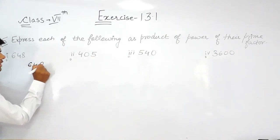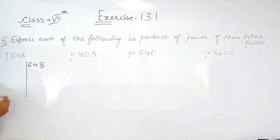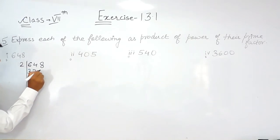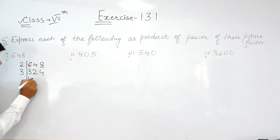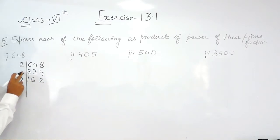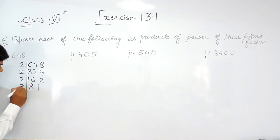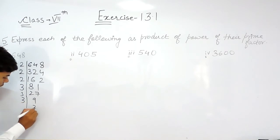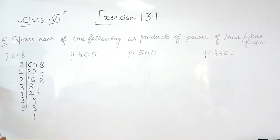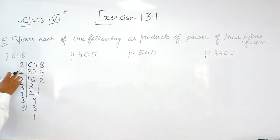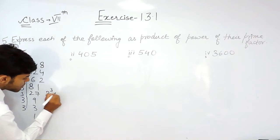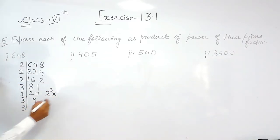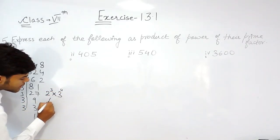Let's start with 648. We do the prime factorization: 2 times, 2 times, 2 times 2 — then 81, 3 times 27, 3 times 9, 3 times 3, and 1. So now we write it in the form of powers: this is 2 to the power 3 multiplied by 3 to the power 4. This is the answer — this is how you express it in the form of powers of prime factors.